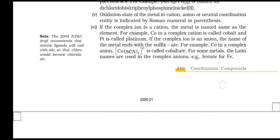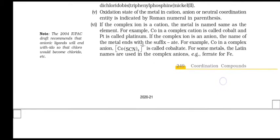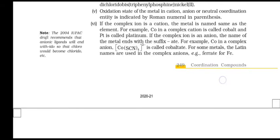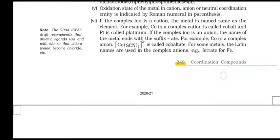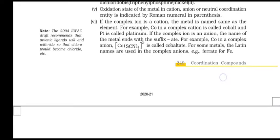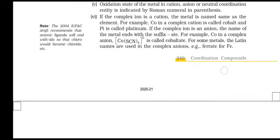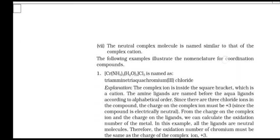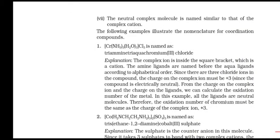The oxidation state of the metal in cationic and anionic coordination entities is indicated by a Roman numeral in parentheses. If the complex is a cation, the metal is named the same as the element, e.g. cobalt or platinum. If the complex ion is an anion, the name of the metal ends with the suffix -ate, e.g. cobalt in [Co(SCN)4]2- is called cobaltate. For some metals, Latin names are used for anions, e.g. ferrate for Fe. The neutral complex is named similarly to complex cations.